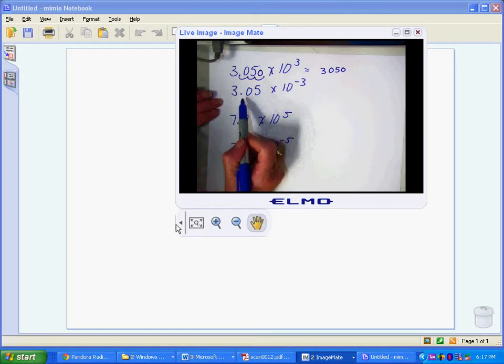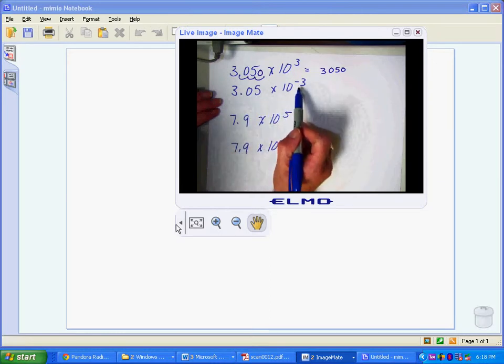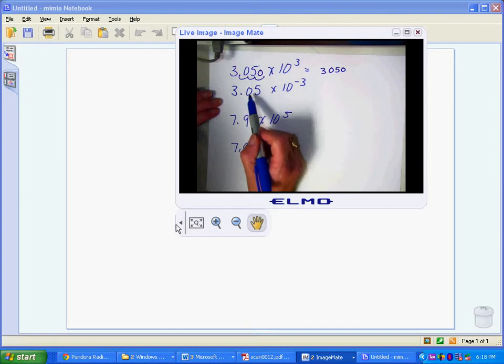Now, let's take a look at this one. It's the same numbers, 3.05, but our exponent is small or negative. That's because this is a number that is smaller than 1.